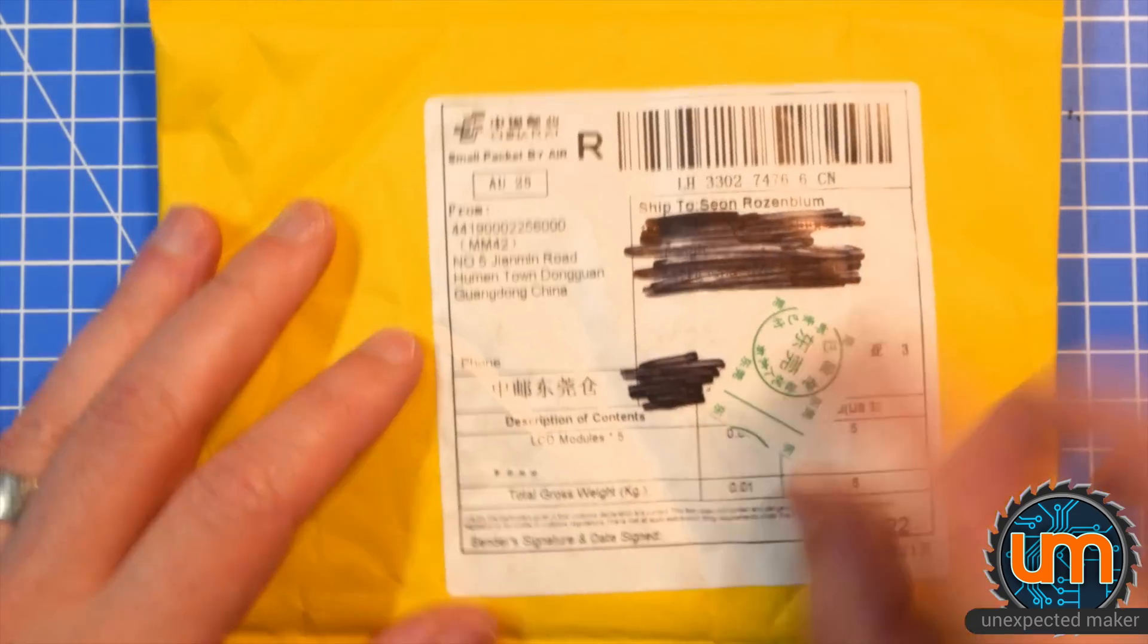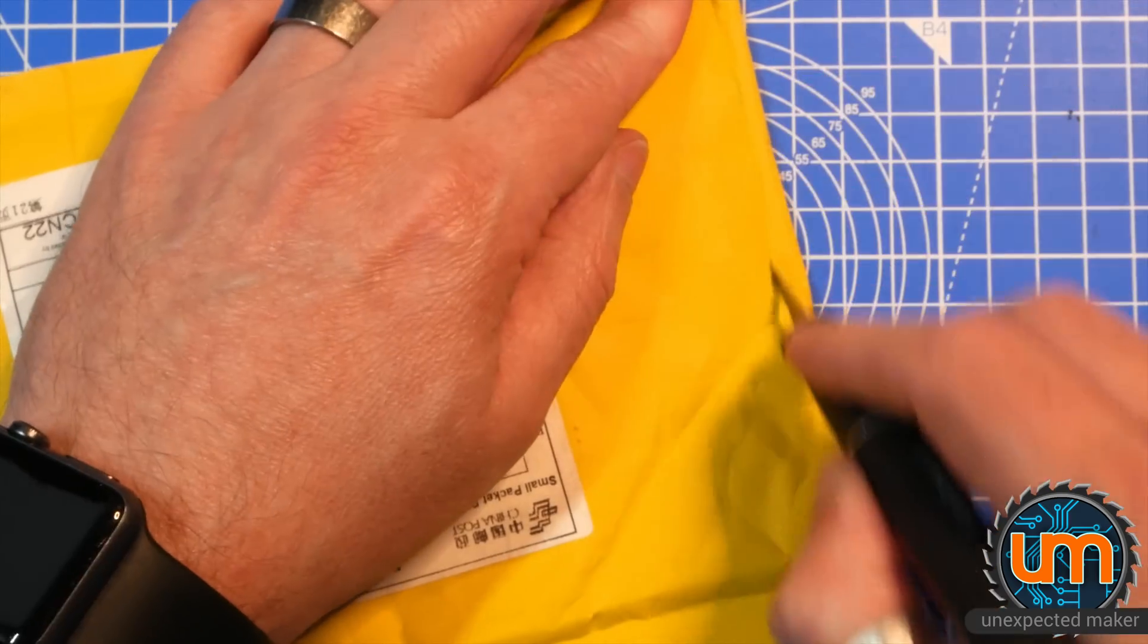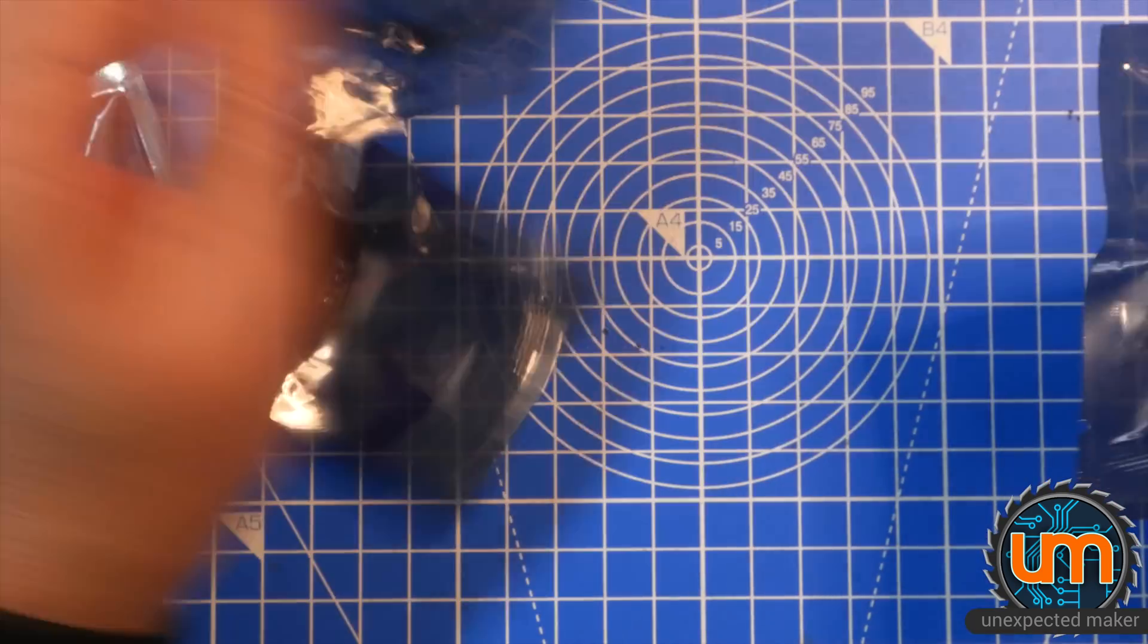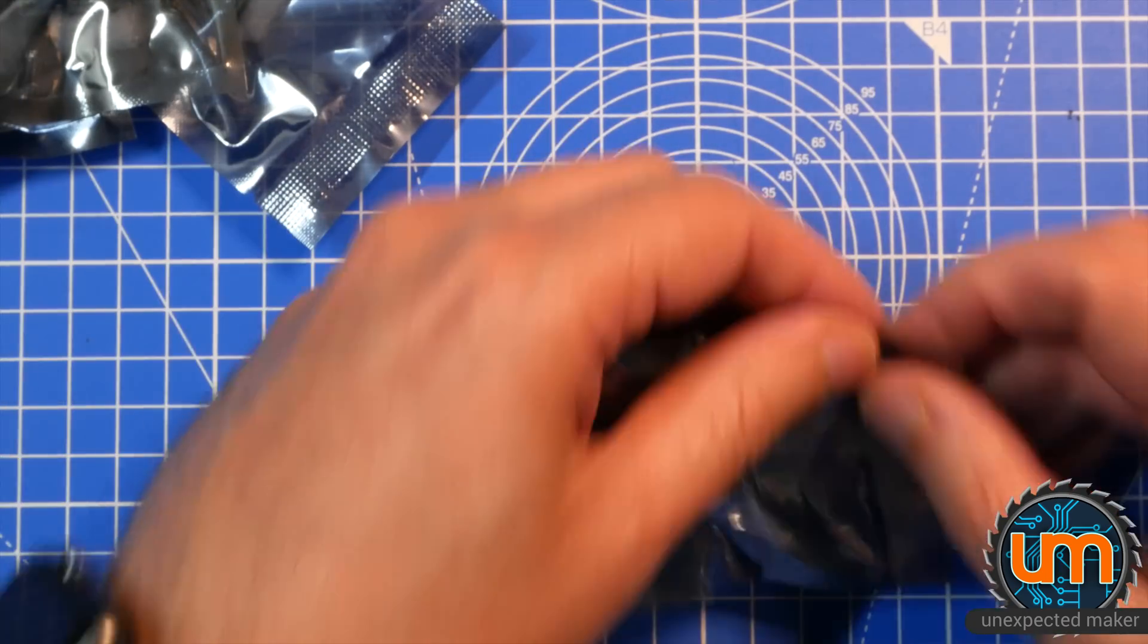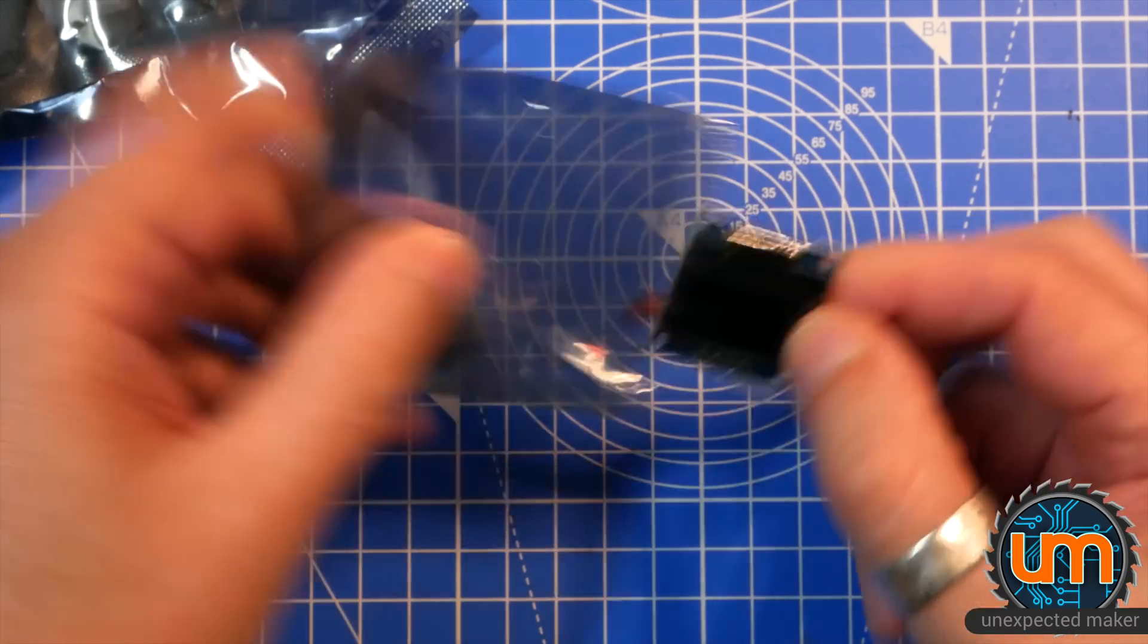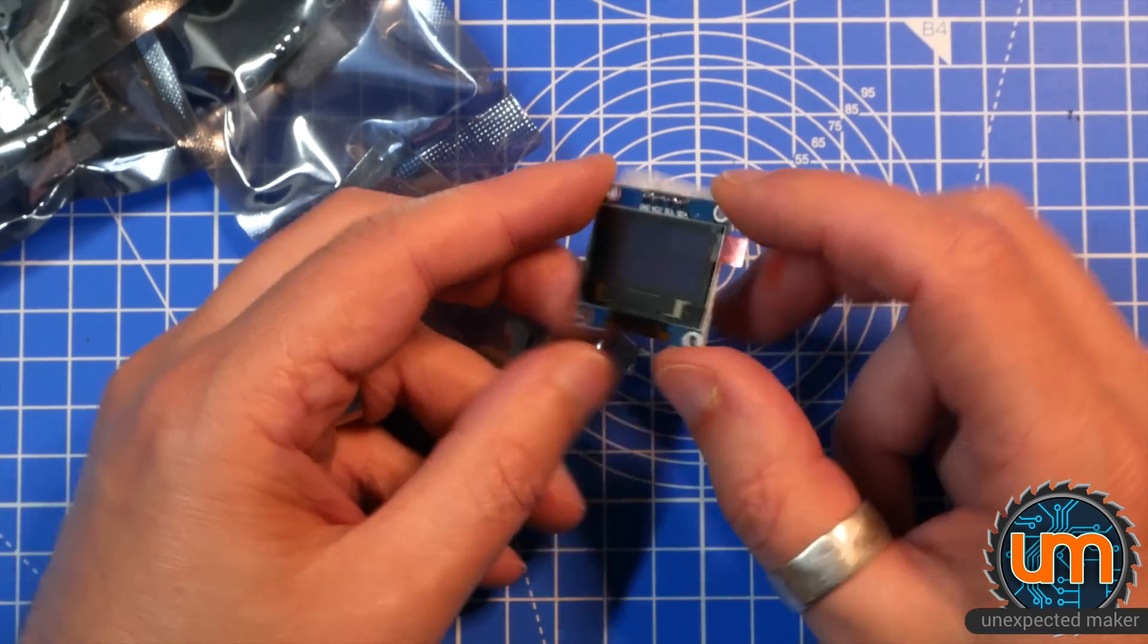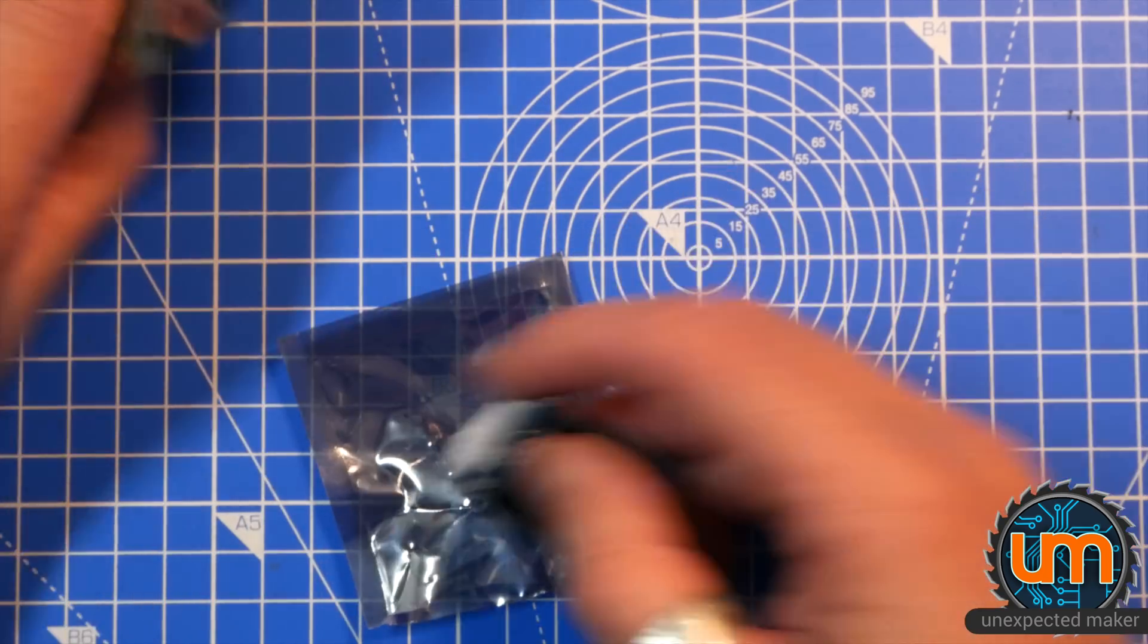Next we have LCD modules times five. Well, I think we can all guess what these are. There it will come. Okay, these are one, two, three, four, five, all the pins are sticking out. I hope these aren't broken, but these are little screens, the ones I'm using on my test jig. They're I squared C, so it only needs four pins and they're just white. So I need these if I want to make some more of the Pi-based test jigs. Excellent.